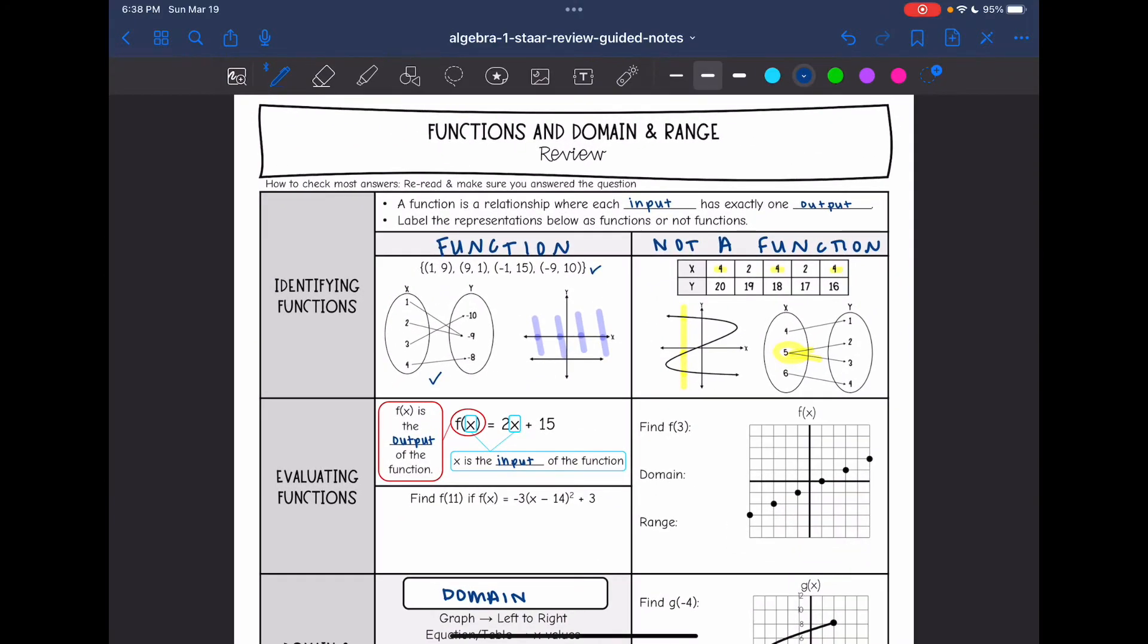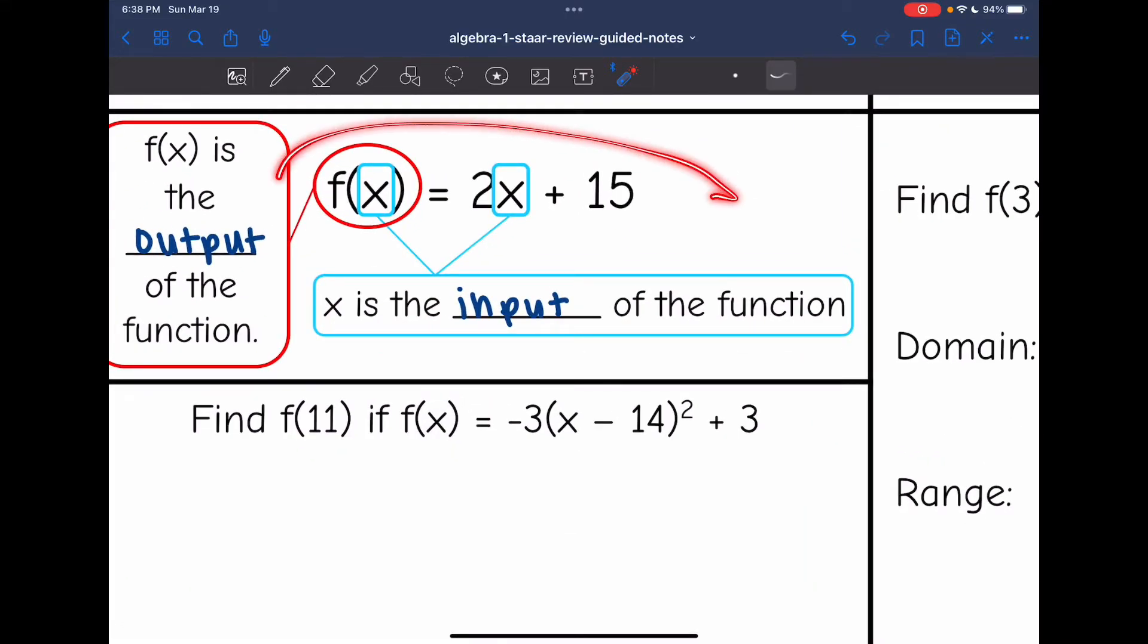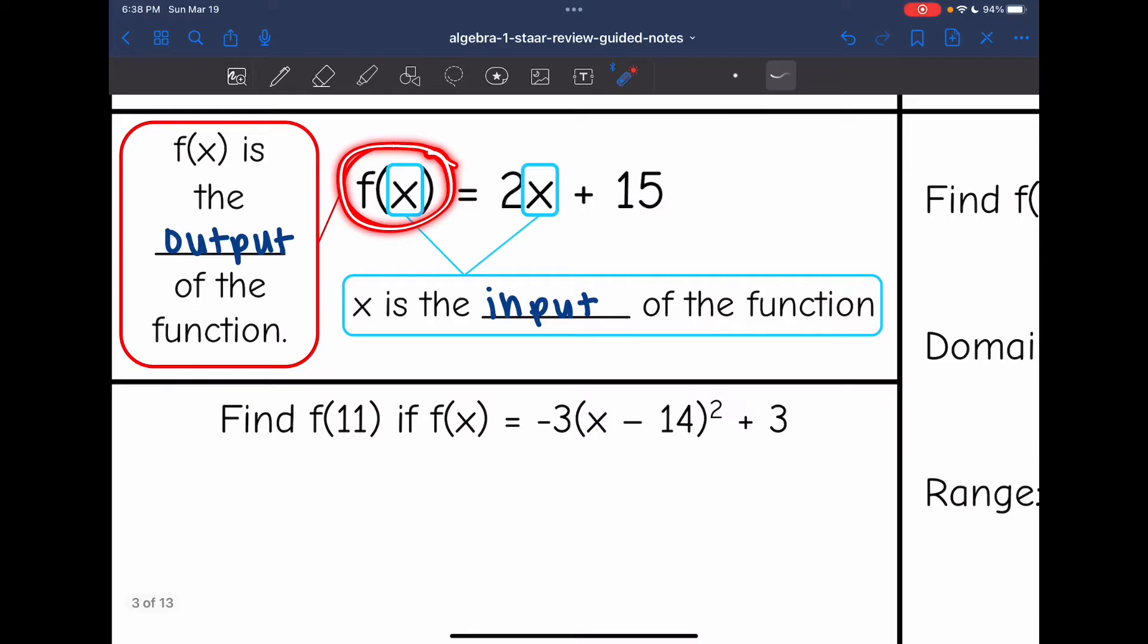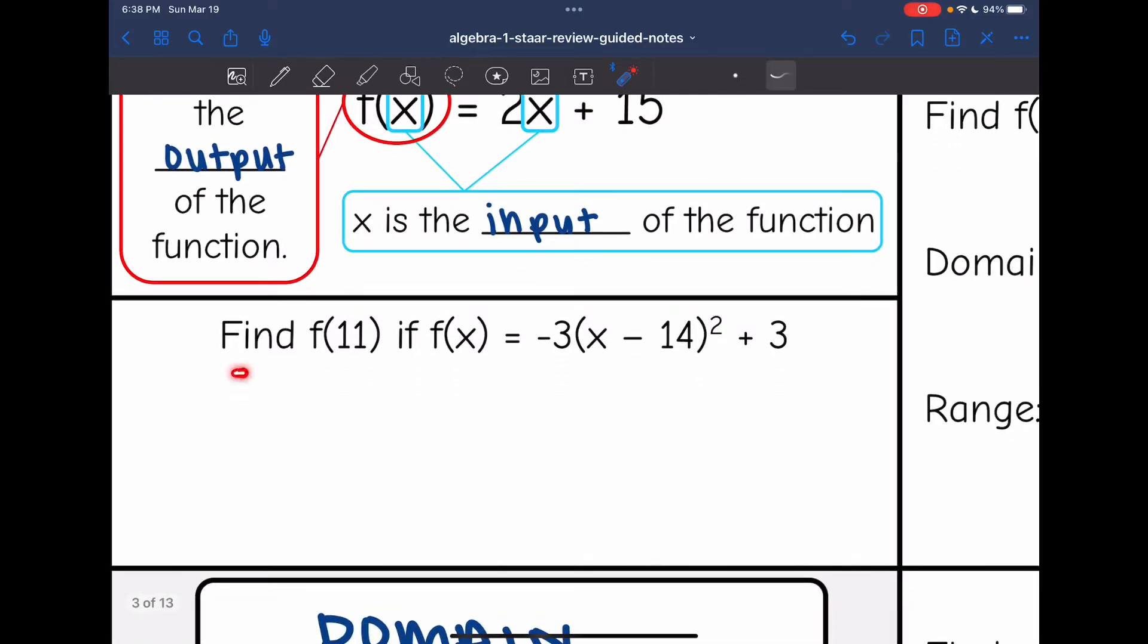We also learned how to evaluate functions in function notation. So here's an example of a function equation. Remember, this reads as f of x, and that is the whole output of the function. It's the same thing as y. And then x is the input of the function. So if it has something inside the parentheses, that is what you replace the x with in the function.